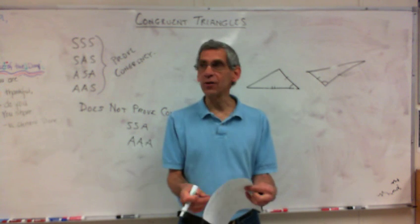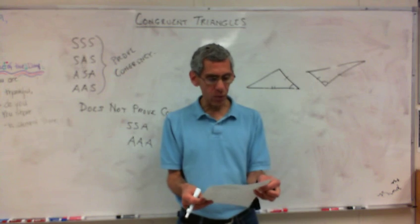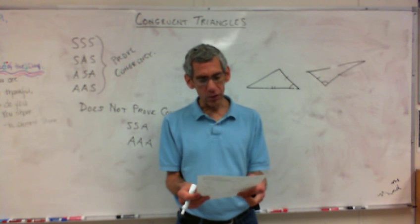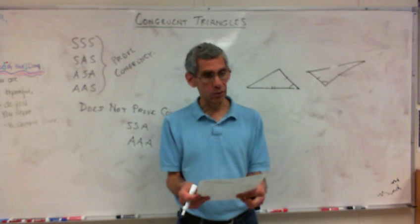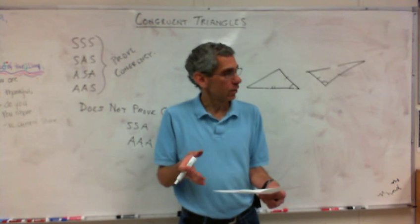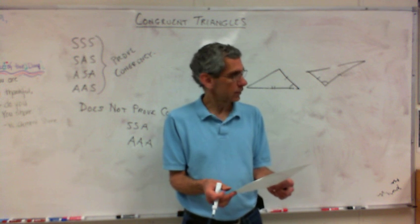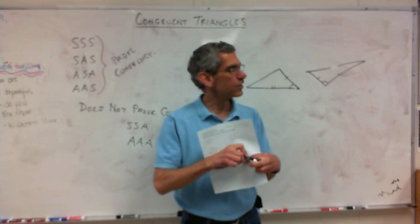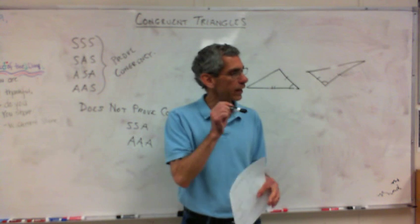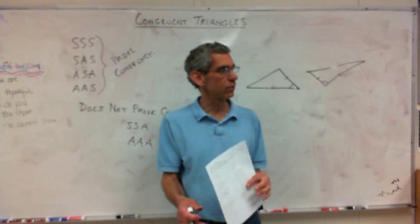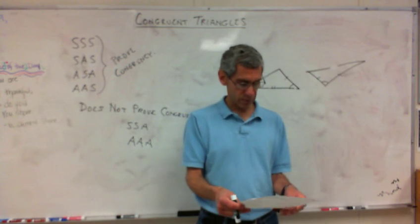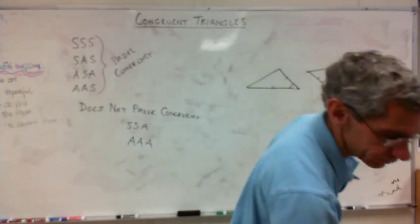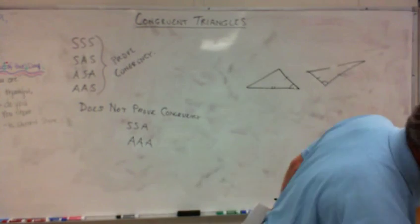Now on the back of the homework, just so you know, it says 'state what additional information is required in order to know that the triangles are congruent.' So if you can't prove it the way it's written, you have to say what you would need to add to make the proof work.